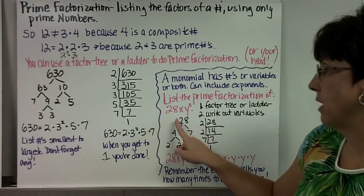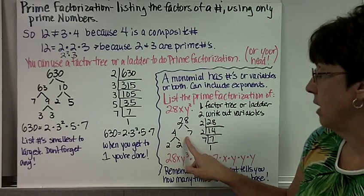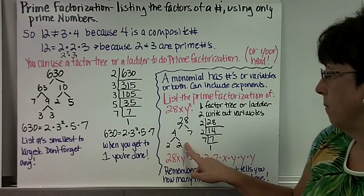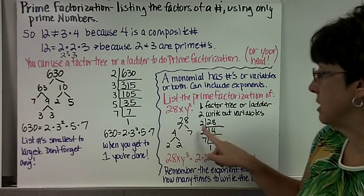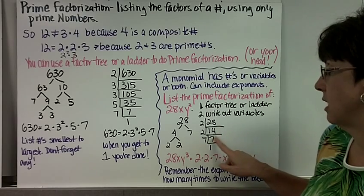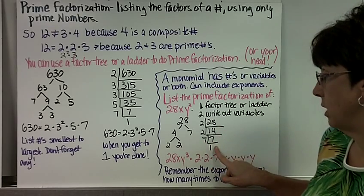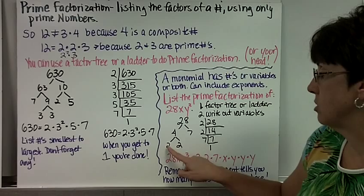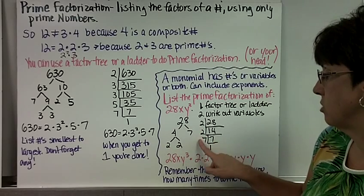So if I'm going to do a factor tree for 28, I'll say 4 times 7, and 4 is 2 times 2. If I were doing the ladder, I would say 2 goes into 28 14 times, 2 goes into 14 7 times, 7 goes into itself once. But either way, I know it's 2 times 2 times 7.